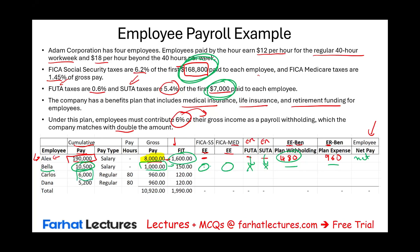Now Carlos. Carlos's cumulative pay so far is $6,000, and gross pay this period is $960. Carlos is below $168,800, so Carlos will pay Social Security at 6.2% times $960 and Medicare at 1.45% times $960. Would the employer pay FUTA and SUTA? Yes — because $6,000 plus $960 is only $40 below the $7,000 limit, so FUTA at 0.6% and SUTA at 5.4% apply. The employee benefit withholding is 6% of $960, and times 2 gives the employer contribution.